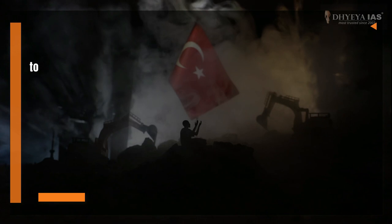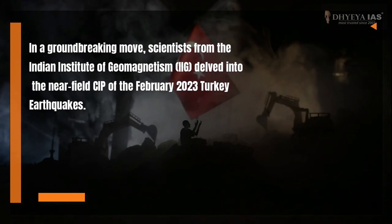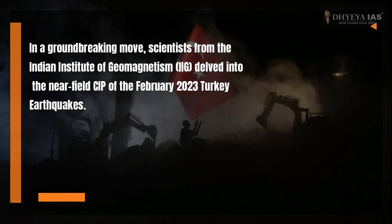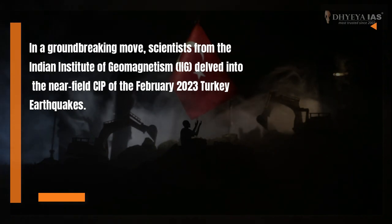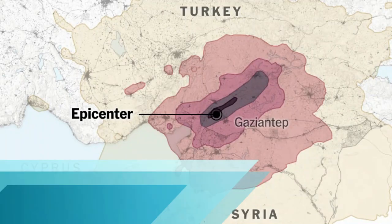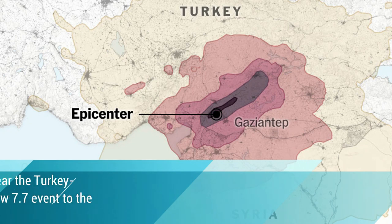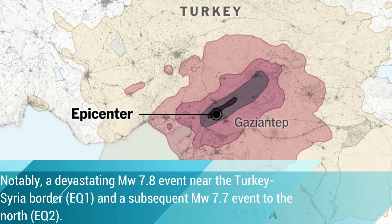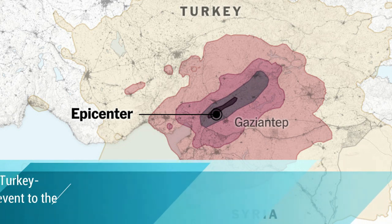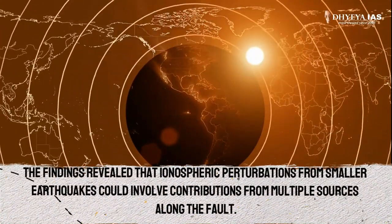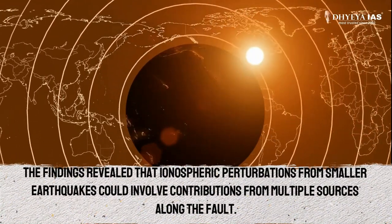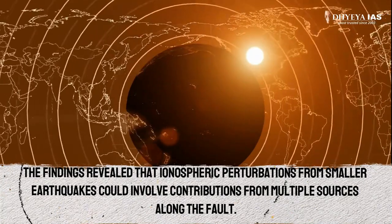In a groundbreaking move, scientists from the Indian Institute of Geomagnetism (IIG) delved into the near-field CIP of the February 2023 Turkey earthquakes — notably a devastating MW7.8 event near the Turkey-Syria border (EQ1), and a subsequent MW7.7 event to the north (EQ2). The findings revealed that ionospheric perturbations from smaller earthquakes could involve contributions from multiple sources along the fault.